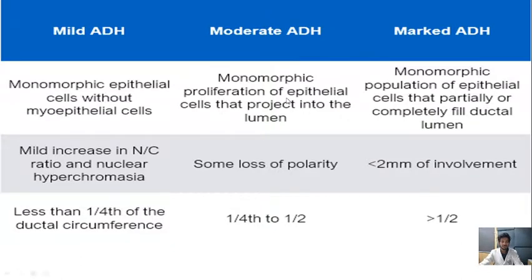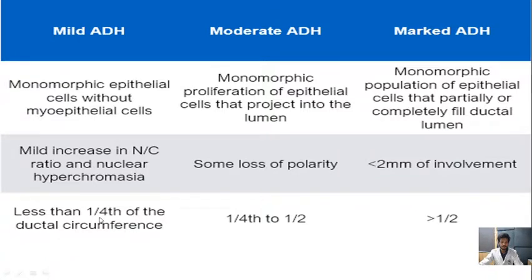Atypical ductal hyperplasia is classified into three types: mild, moderate, and marked. In mild, there is a mild increase in nuclear-to-cytoplasmic ratio and nuclear hyperchromasia. In moderate, there is some loss of polarity. In marked, it involves less than 2 mm. The duct circumference involvement is less than one-fourth of the total duct circumference in mild, one-fourth to half in moderate, and more than half in marked atypical hyperplasia.